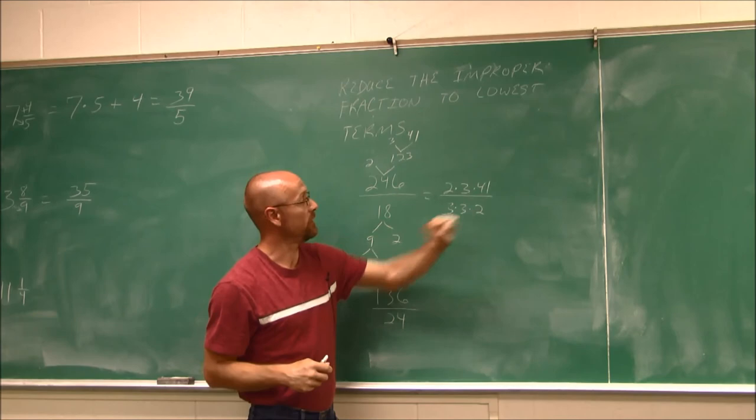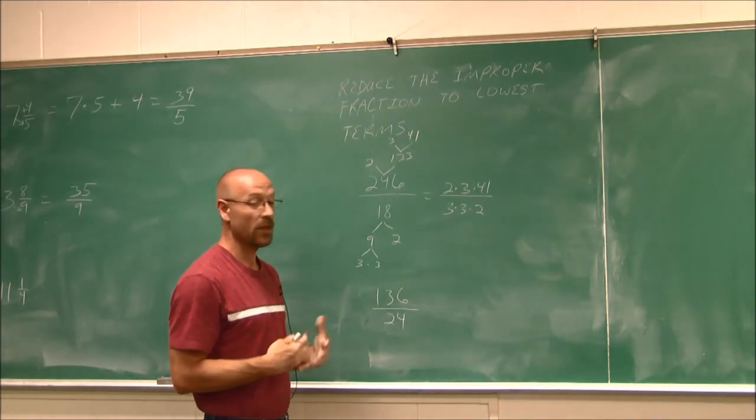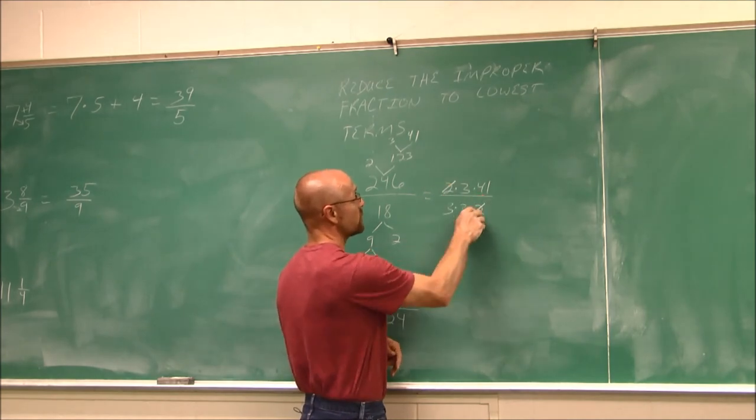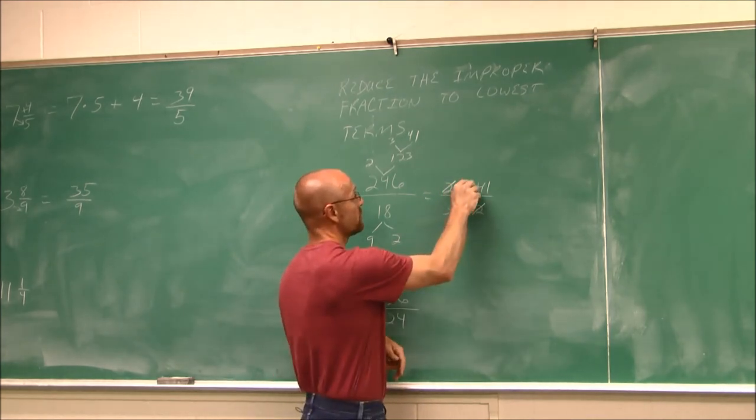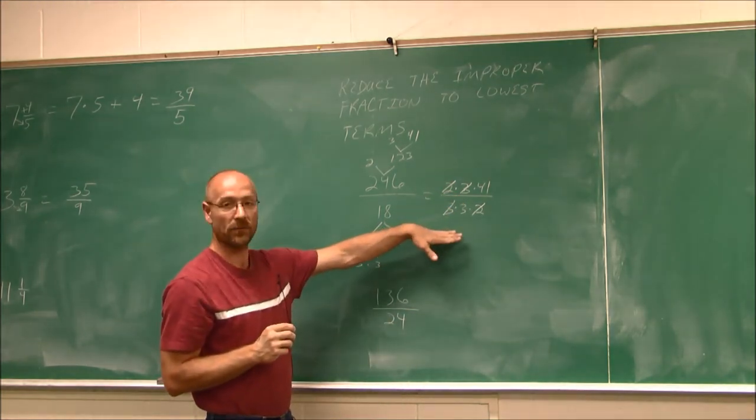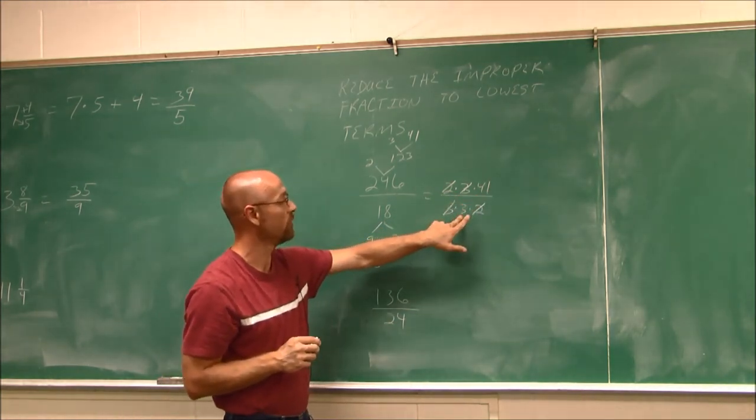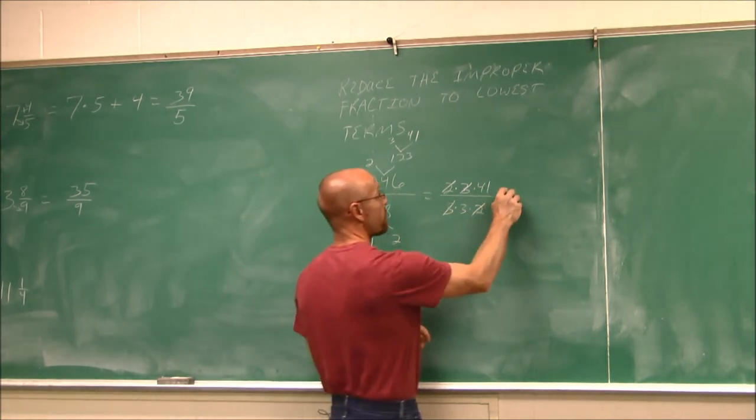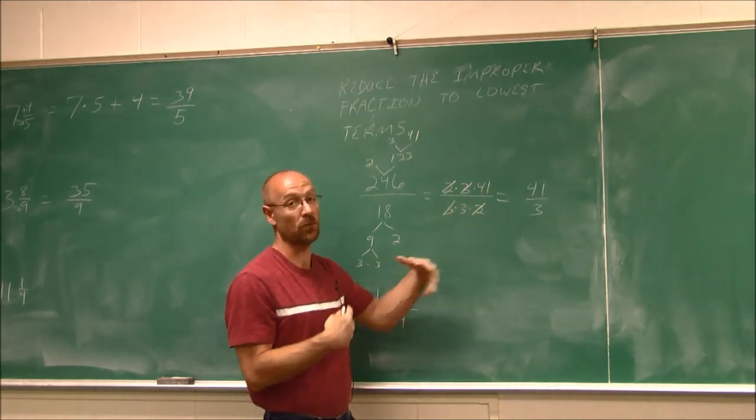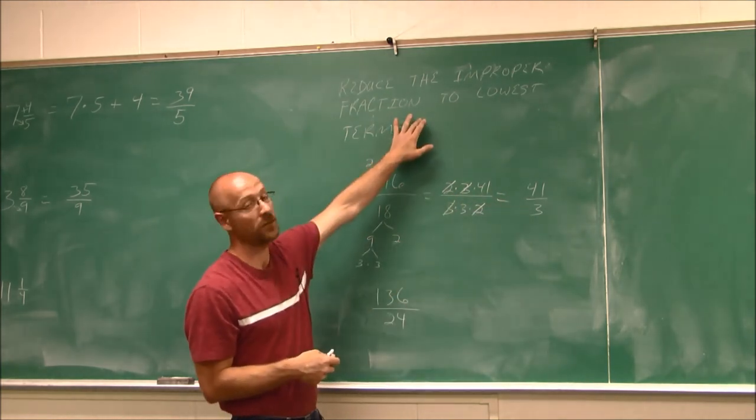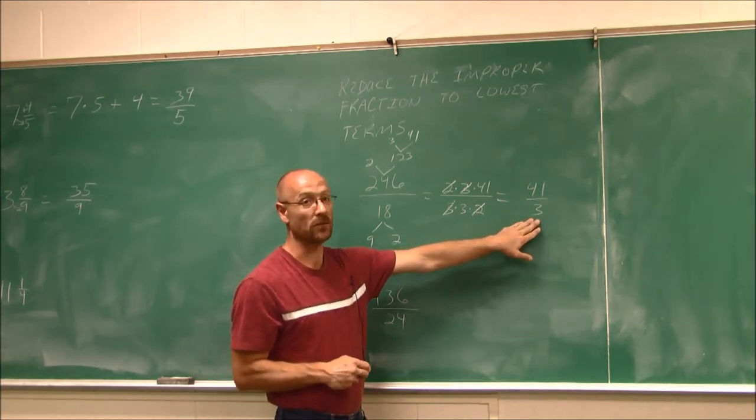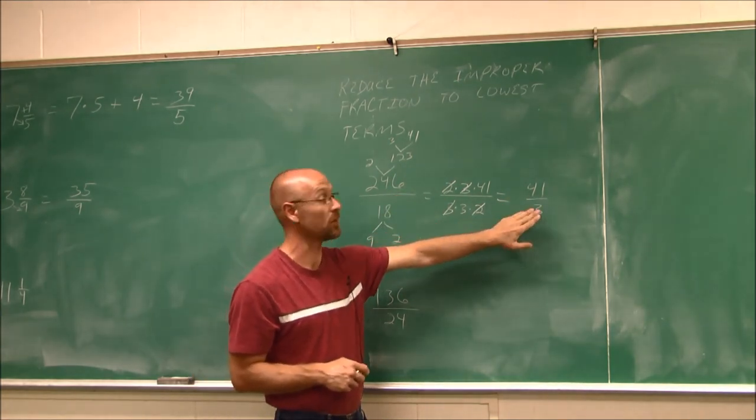Now that I've written it as its prime factorization, I can reduce. Any number divided by itself is 1. So this 2 reduces that 2. And this 3 can reduce only one of these 3's. And if we look at what's left, we have 41 over 3. Now if I wanted to, I could do that division and write it as a mixed number. But the directions did not tell me to do so.